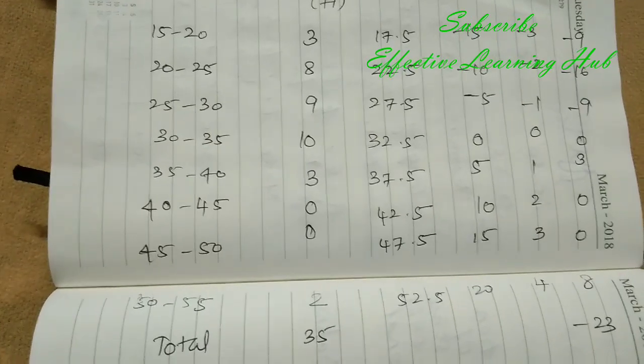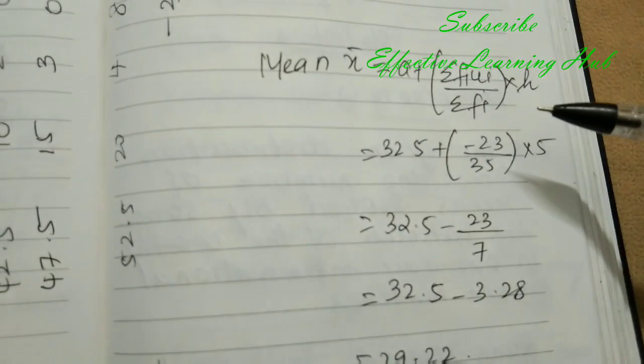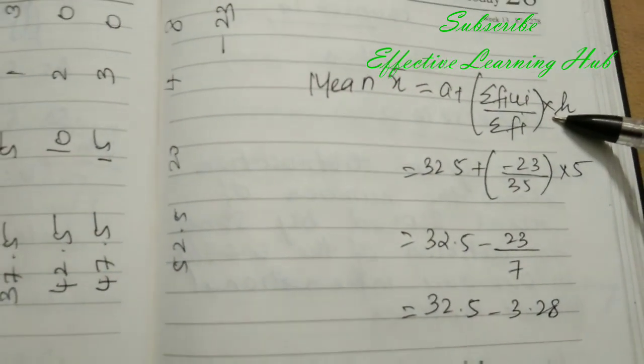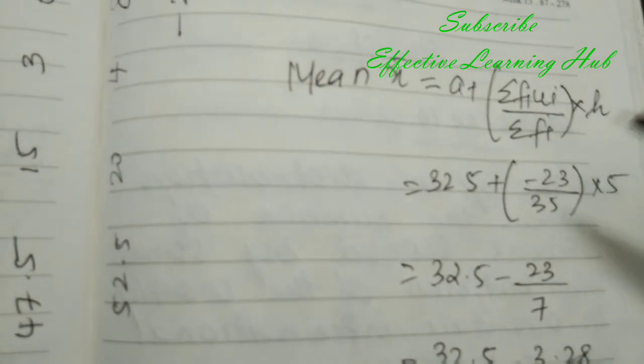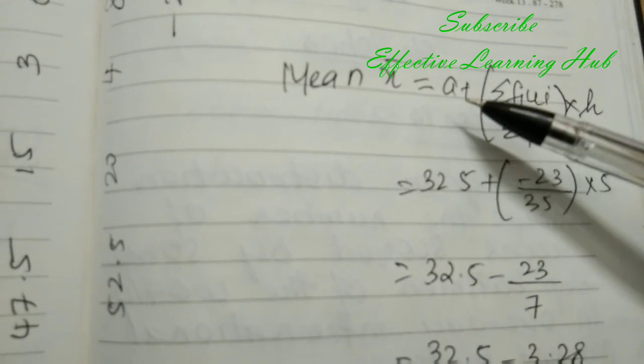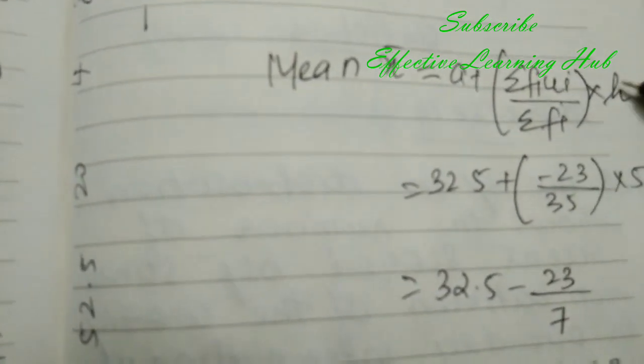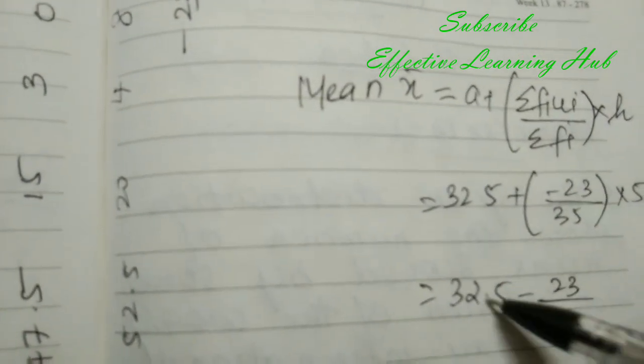Now substitute the values. Three formulas there in mean: direct method, step deviation method, assumed mean method. Any formula, no problem. Here used X bar equal to A plus Sigma FI UI divide by Sigma FI into H. A value already find 32.5.